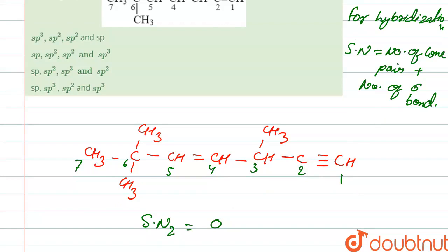At carbon two, there is one sigma bond and one sigma bond — that is two sigma bonds — and here it is a pi bond, and here also a pi bond. So there are two sigma bonds; the steric number is two. So its hybridization is sp hybridized.